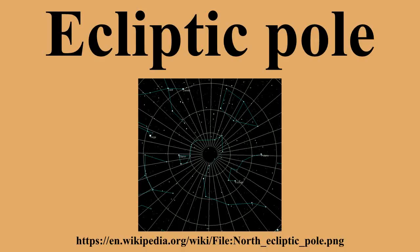The ecliptic pole is the point on the celestial sphere where the sphere meets the imaginary line perpendicular to the ecliptic plane — the path the Earth travels on its orbit around the Sun.